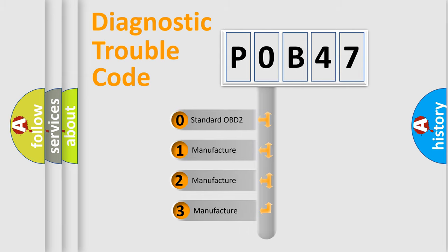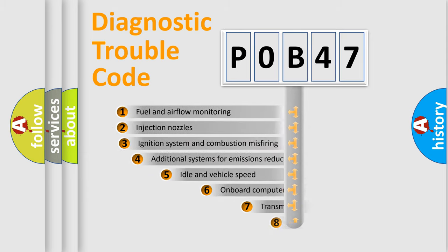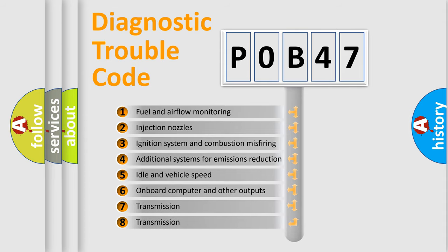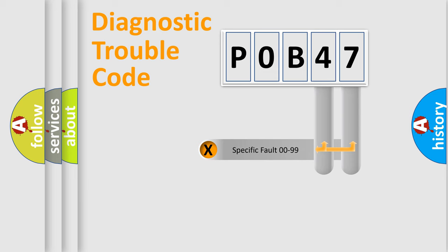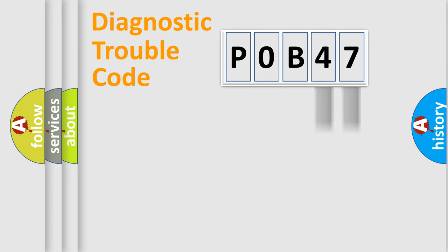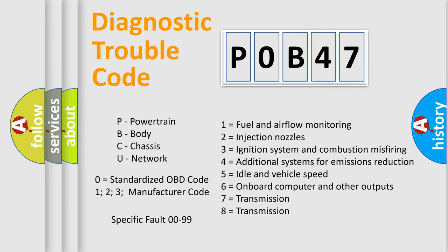If the second character is expressed as zero, it is a standardized error. In the case of numbers 1, 2, or 3, it is a manufacturer-specific expression of the car error. The third character specifies a subset of errors. This distribution is valid only for the standardized DTC code. Only the last two characters define the specific fault of the group, and this division is valid only when the second character is expressed by zero.